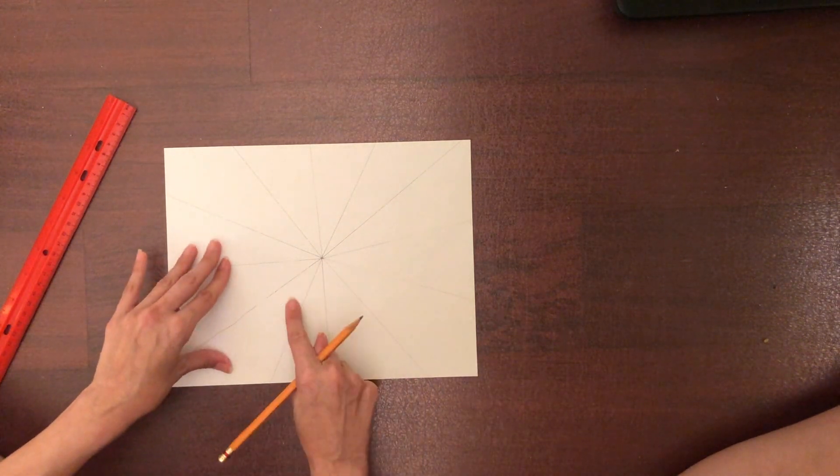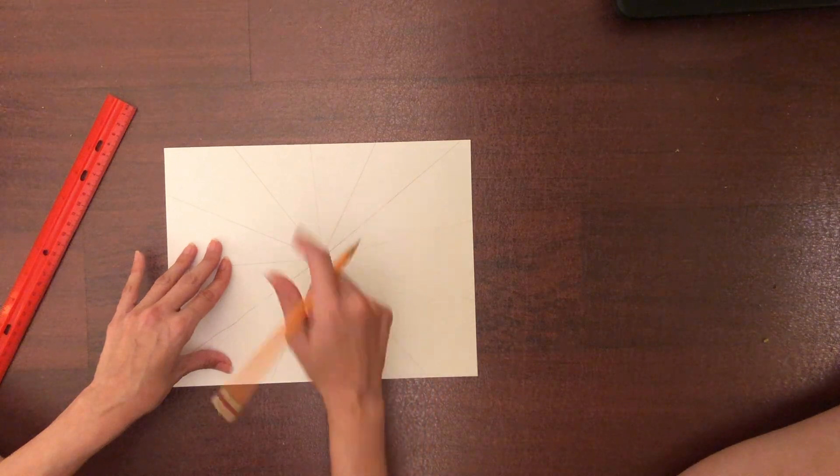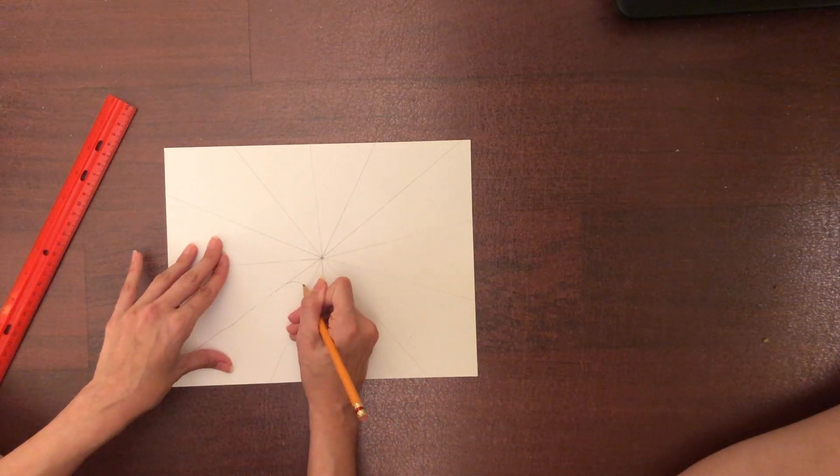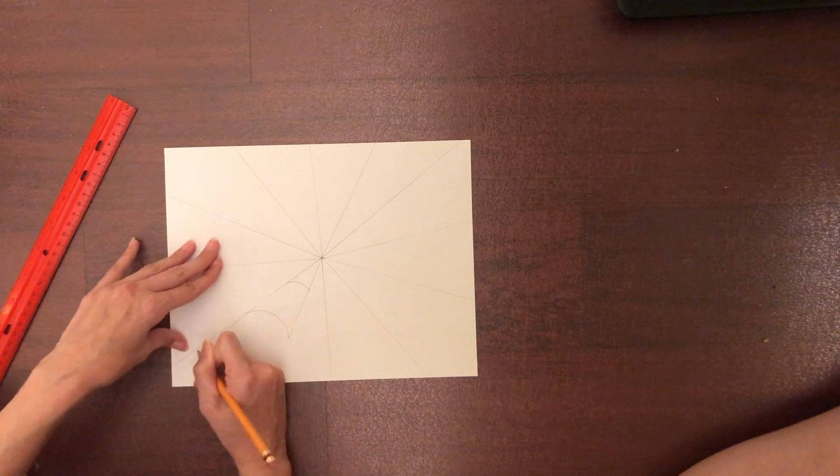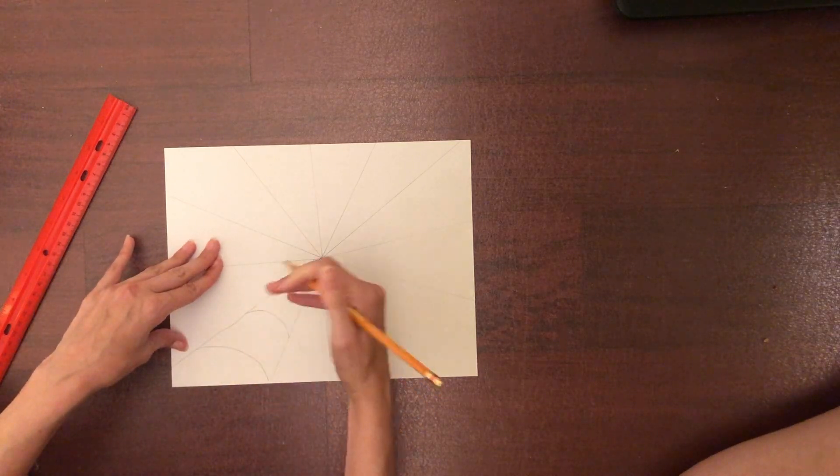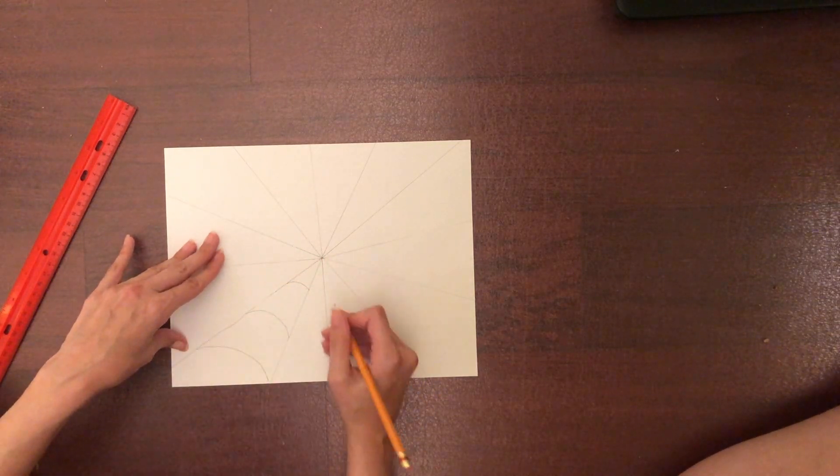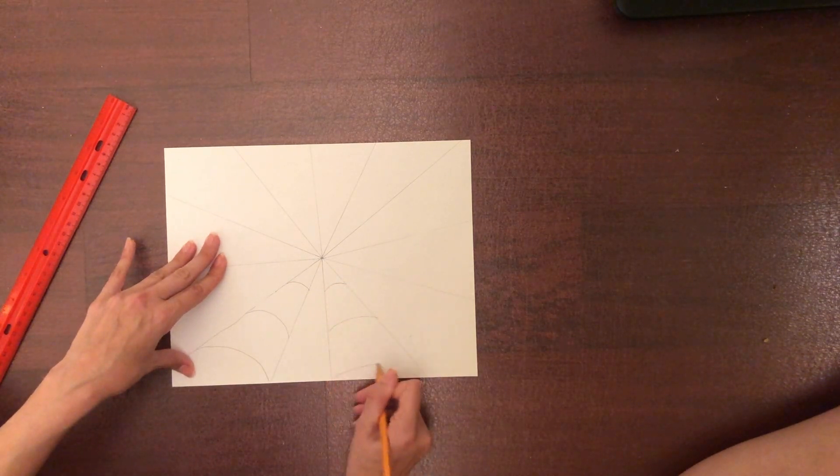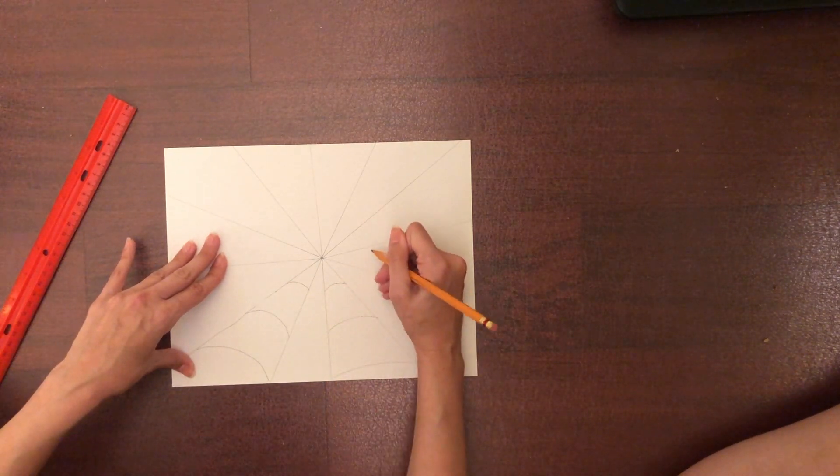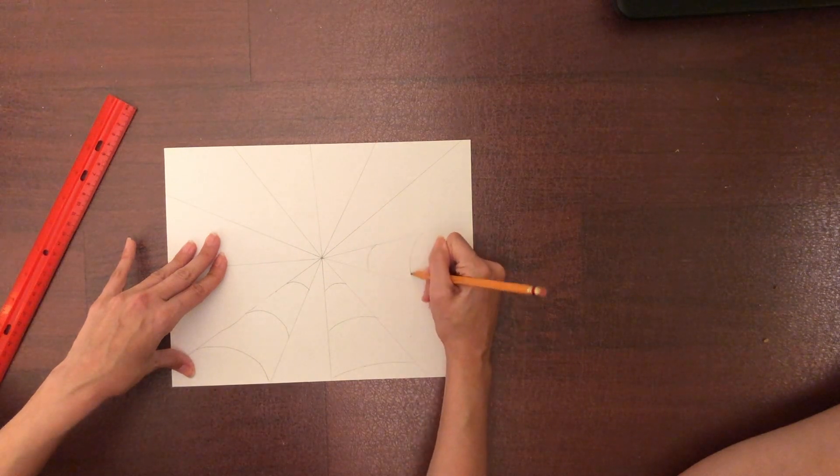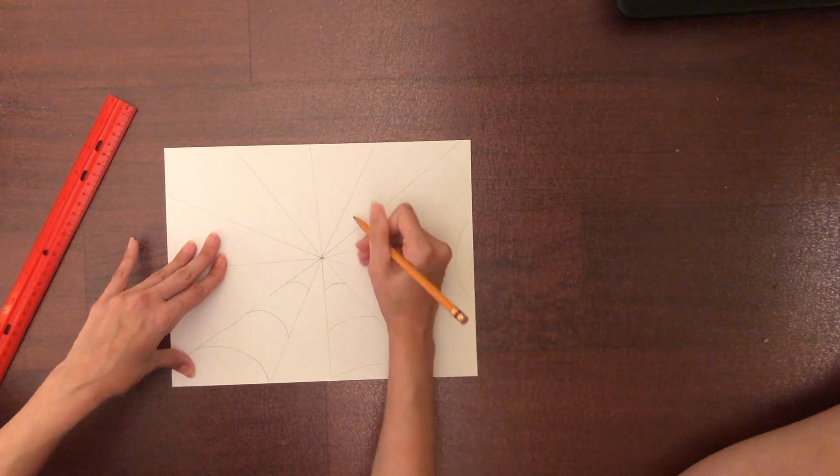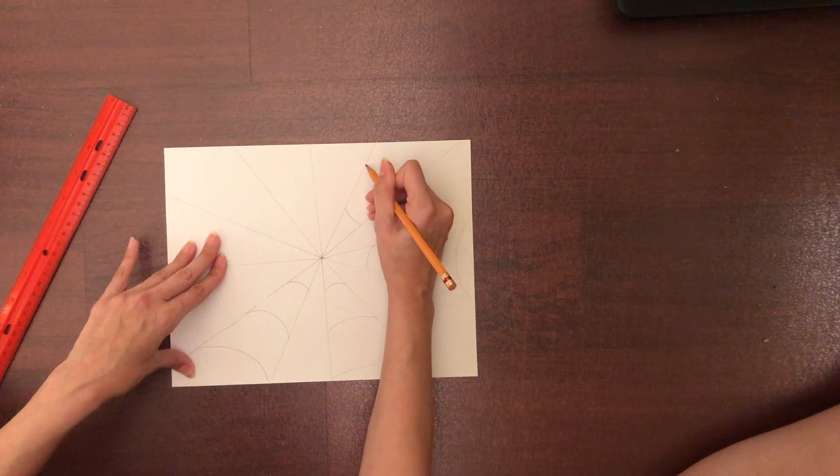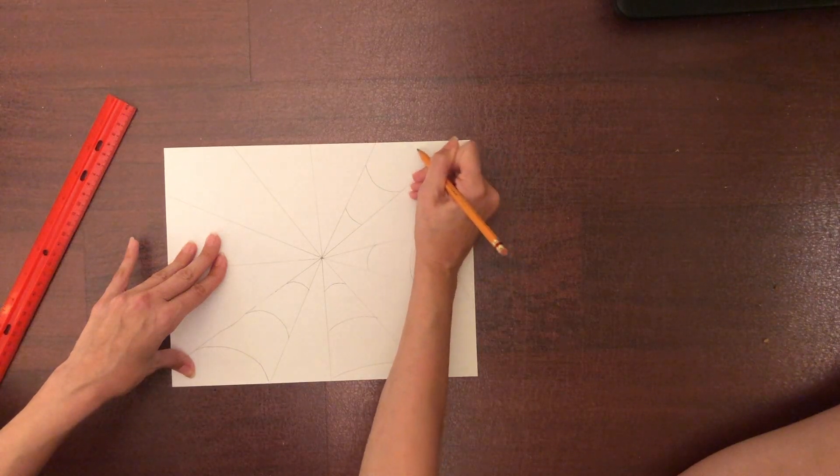Now I'm going to skip a section. I'm going to alternate and make curves. Notice these curves are curving outward. I'm making three in each section.